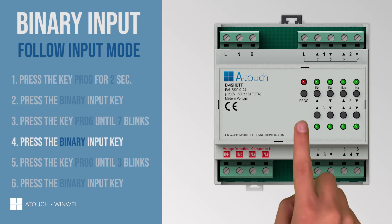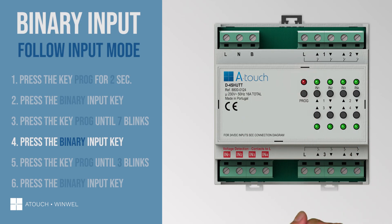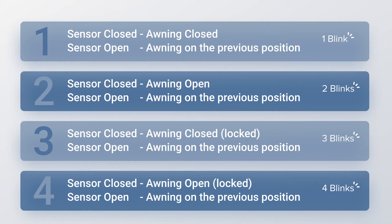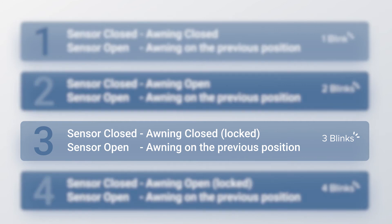Press again the binary input key. The next step is to choose one of the four options the follow input command offers. Let's choose option 3, where the awning will close during strong wind events and return to the previous position when the wind stops. Option 3 adds the lock function, where the system locks all awning keys on the touch panels and on the touch app while the contact is closed.